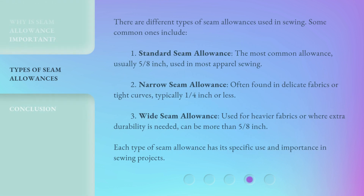There are different types of seam allowances used in sewing. Standard seam allowance: the most common allowance, usually 5/8 inch, used in most apparel sewing. Narrow seam allowance: often found in delicate fabrics or tight curves, typically 1/4 inch or less. Wide seam allowance: used for heavier fabrics or where extra durability is needed, can be more than 5/8 inch. Each type of seam allowance has its specific use and importance in sewing projects.